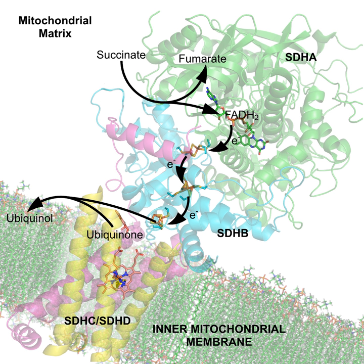The first organic cofactor to be discovered was NAD+, which was identified by Arthur Harden and William Young in 1906. They noticed that adding boiled and filtered yeast extract greatly accelerated alcoholic fermentation in unboiled yeast extracts. They called the unidentified factor responsible for this effect a coferment. Through a long and difficult purification from yeast extracts, this heat-stable factor was identified as a nucleotide sugar phosphate by Hans von Euler-Chelpin. Otto Heinrich Warburg identified the function of NAD+ in hydride transfer in 1936.